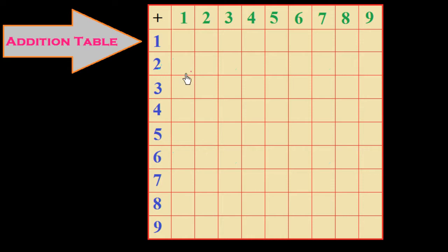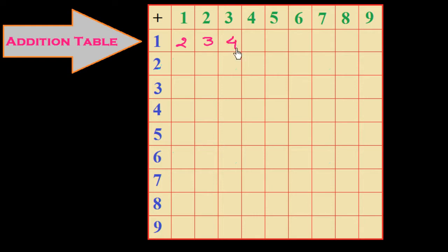First I write the numbers in the top row: one, two, three, four, five, six up to nine. In the vertical column we have also written numbers one to nine. We have to write consecutive numbers — one, two, three, four, five, six, seven, eight, nine, ten — continuing down: two, three, four, five, six, seven, eight, nine, ten.